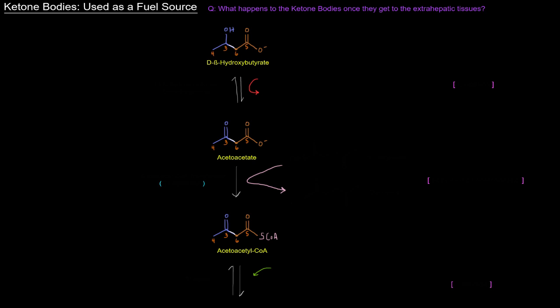Okay, so in the last video we talked about how we made the ketone bodies. We made D-beta-hydroxybutyrate, but what happens to the ketone bodies once they get to the extra hepatic tissues? That's basically what this whole video is about.